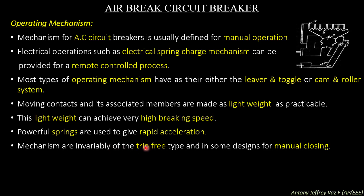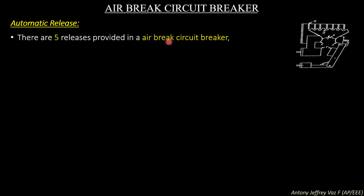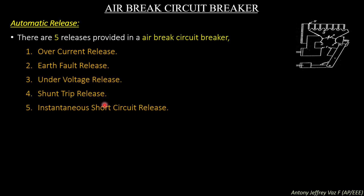Mechanisms are invariably of the trip-free type and in some designs for manual closing. Air break circuit breakers are made for automatic opening but the closing procedure is manual. A device makes immediate tripping if any reversal occurs in the direction of motion of the operating handle. Automatic tripping can also be achieved using electromagnetic spring automatic release. There are five releases provided in air break circuit breakers: over-current release, earth fault release, under voltage release, shunt trip release, and instantaneous short circuit release.